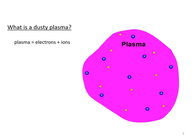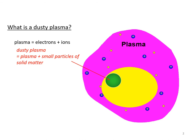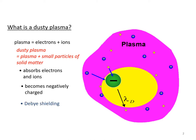A plasma is a medium containing electrons and ions. Dusty plasma is an ordinary plasma containing small mesoscopic particles of solid matter, called dust or grain. Dust can absorb electrons and ions and becomes negatively charged. This creates what we call the Debye shielding.